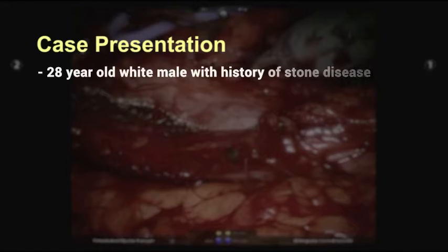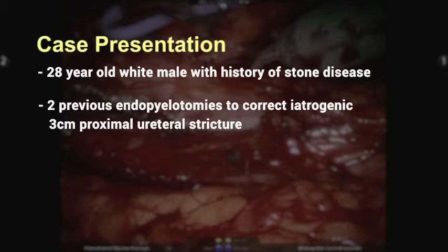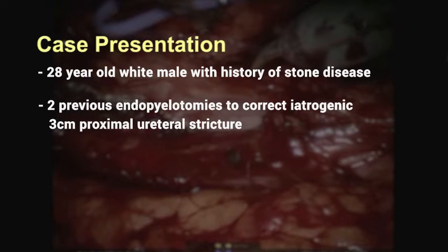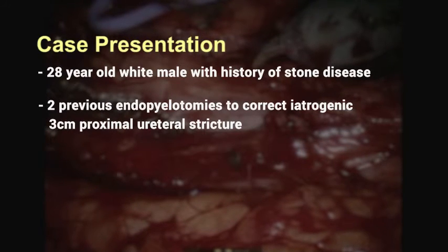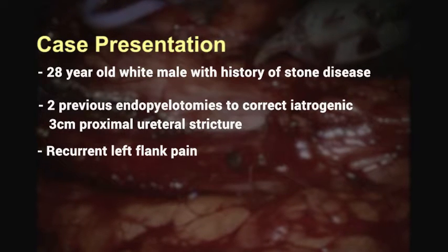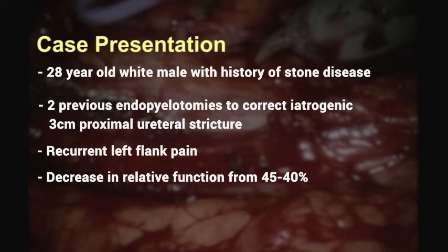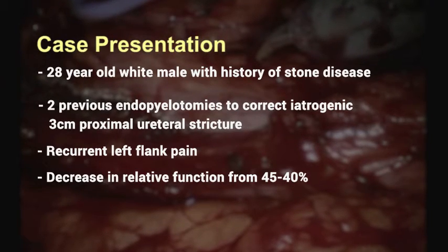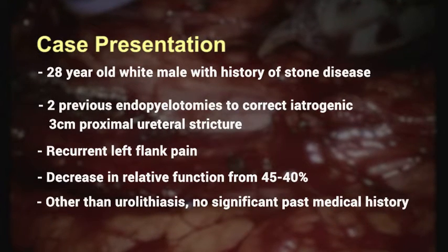The patient is a 28-year-old white male with history of stone disease who had previously undergone two endopilotomies at an outside institution to correct his iatrogenic 3 cm proximal ureteral stricture. He presented with recurrent left flank pain and a MAG-3 renal scan demonstrating a decrease in relative function from 45% to 40% in the setting of previous ureteroscopic lithotripsy for ureteral stones. Other than urolithiasis, he had no significant past medical or surgical history.